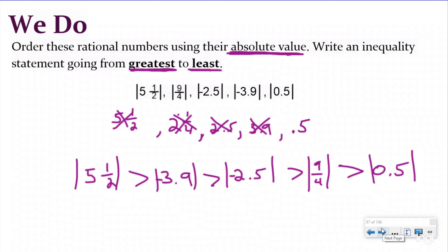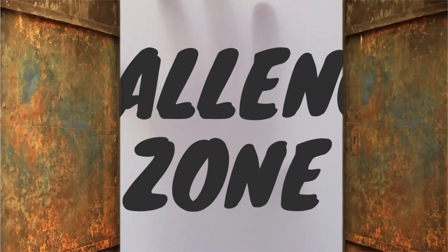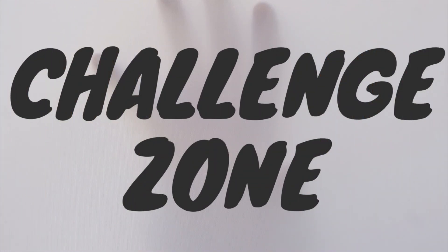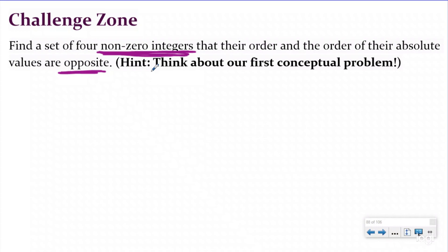If you are good with these and understand what's happening, then you are ready for the challenge zone. Find a set of four non-zero integers — integers are whole numbers, so no fractions or decimals — that are negative or positive whole numbers where their order and the order of their absolute value are opposite. If you need a hint, go back and rewind to the first conceptual problem where we showed the numbers in order of their value and then looked at what changed with absolute value. Push pause, solve it, and then push play to check your understanding.